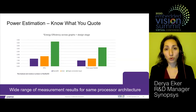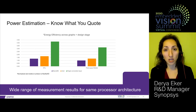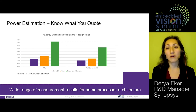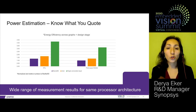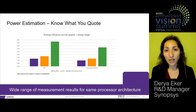Running different benchmarks from real applications with varying energy efficiency, combined with different accuracy levels, will yield different numbers for the same IP architecture. You need to know exactly what you are quoting when evaluating the energy efficiency of a design, as each factor has an impact on the quality of results.